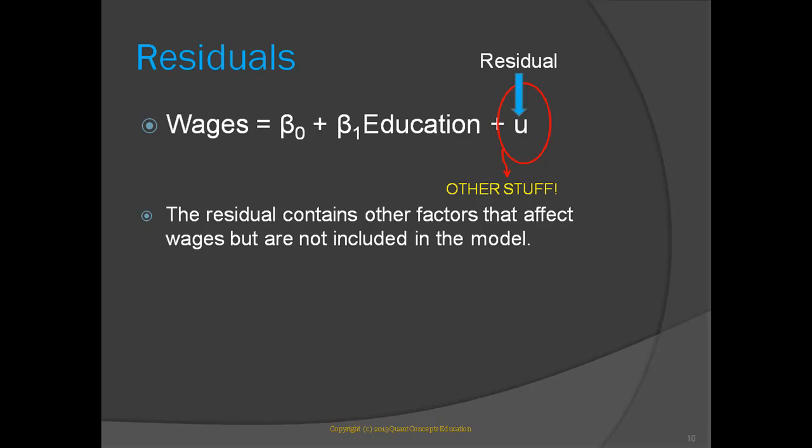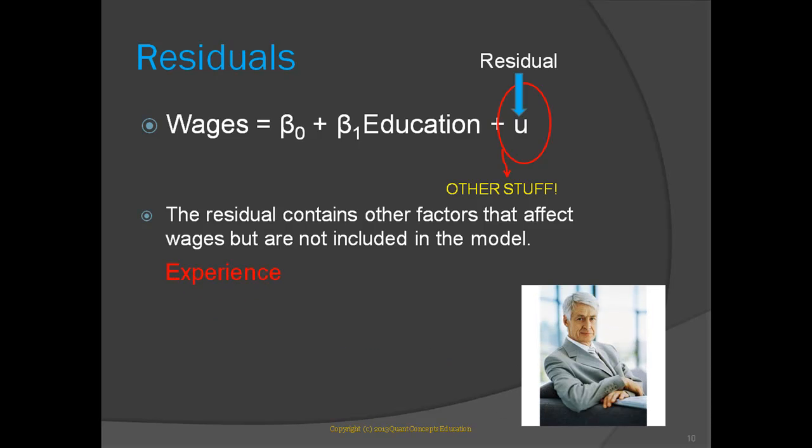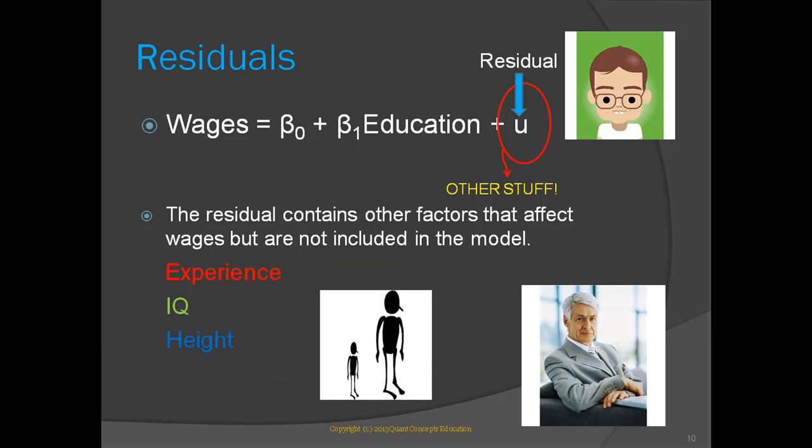So the residual term contains other factors that affect wages but are not contained in the model. In the context of wages and education, other factors that may influence a person's wage are experience. The more work experience you have, the higher your hourly wage. IQ. The smarter you are, the faster you learn on the job, and presumably, the faster you get promoted and earn a higher wage. Or height. Did you know that studies have found that taller people tend to get promoted faster than shorter people? True story. Google height and salary to find out for yourselves.